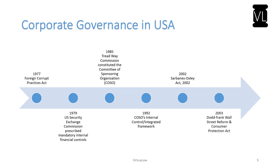In the year 2010, the Dodd-Frank Wall Street Reform and Consumer Protection Act was enacted, regarded as financial reform legislation. It was named after its bill sponsors Mr. Dodd and Mr. Frank, and was passed as a response to the financial crisis of 2008. This legislation is essentially a reply in terms of protection of interest of stakeholders as well as shareholders. This concludes the timeline of corporate governance in the USA.